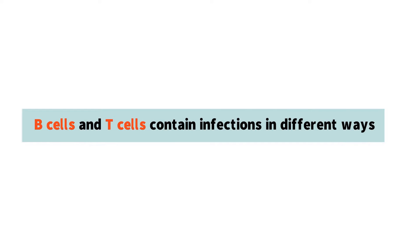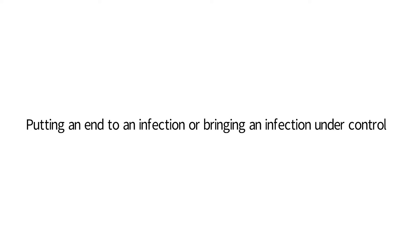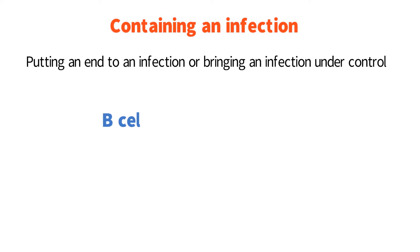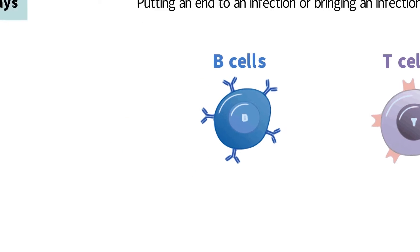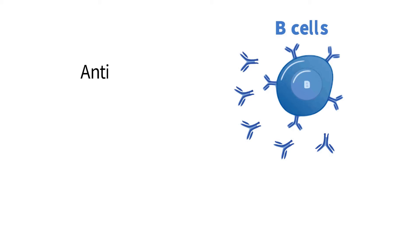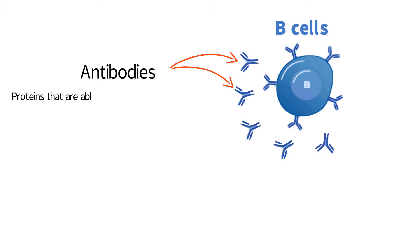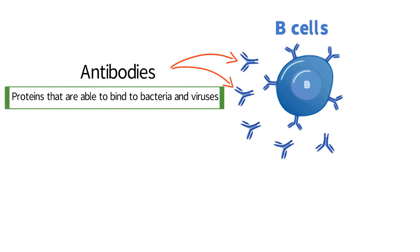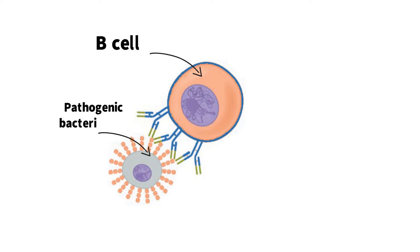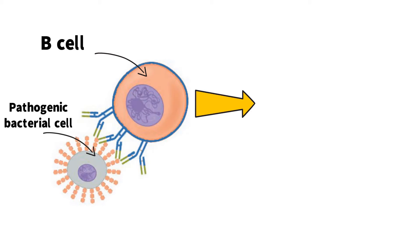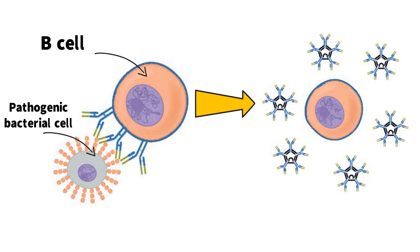Number three: B cells and T cells contain infections in different ways. In immunology, putting an end to an infection or bringing an infection under control is often referred to as containing an infection. B cells produce and secrete antibodies. Antibodies are proteins that are able to bind to bacteria and viruses. Antibodies binding bacterial cells or viruses prevents infections from spreading. The antibodies block the bacteria from growing colonies and, in the case of viruses, the antibodies bind to the viruses and prevent the viruses from infecting cells.